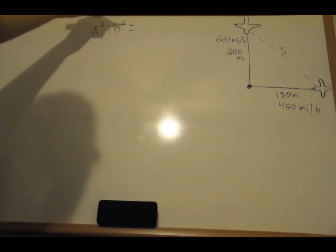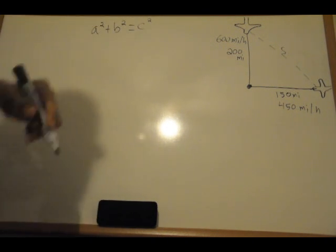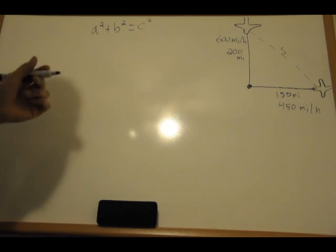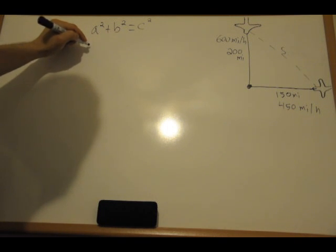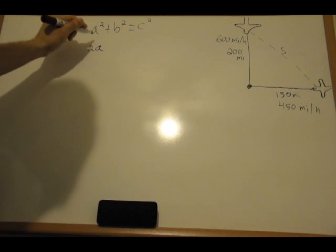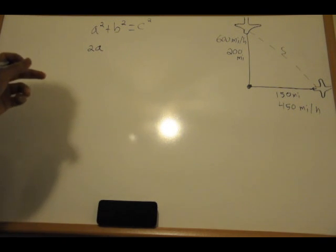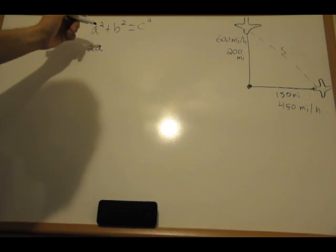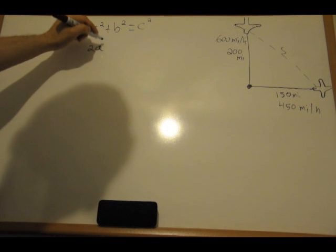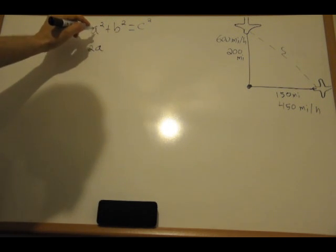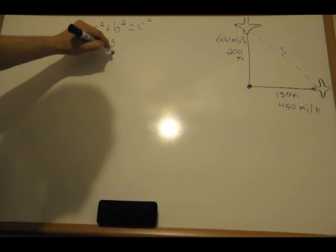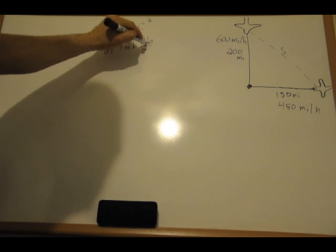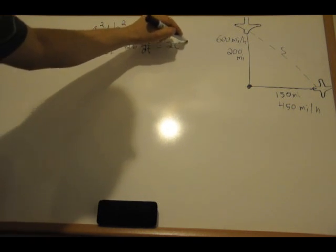Now we're going to differentiate this equation with respect to time. That involves implicit differentiation, so we're going to have 2a times da/dt, and same thing here 2b db/dt is equal to 2c dc/dt.